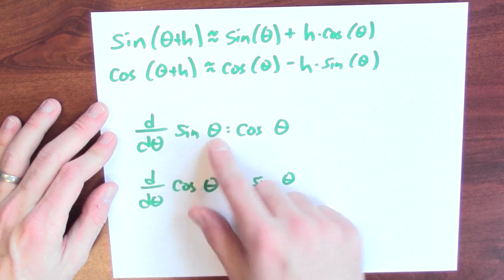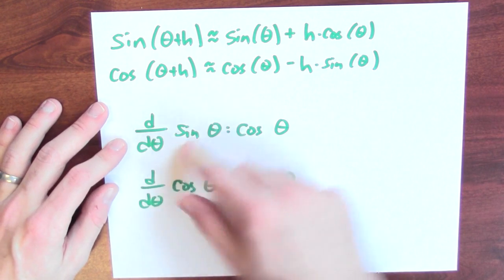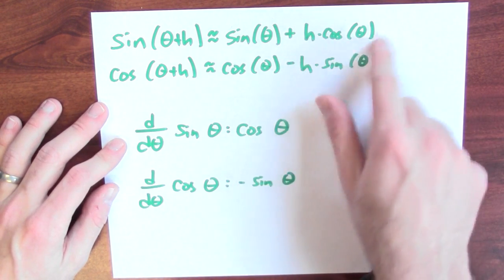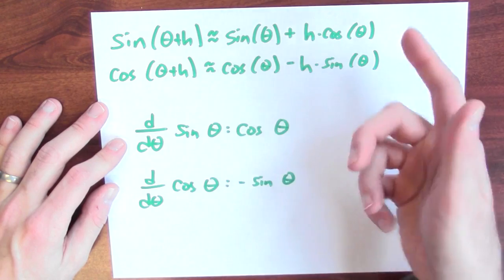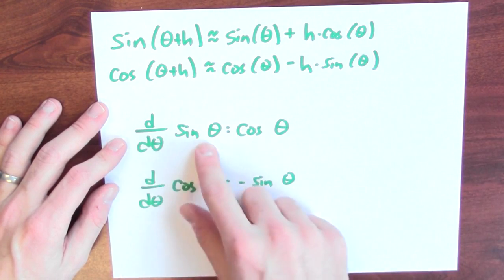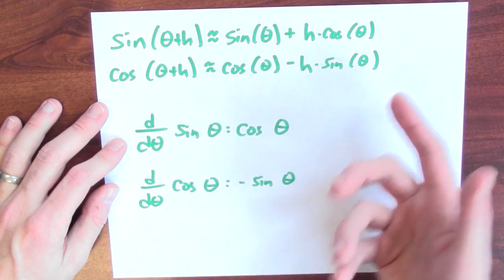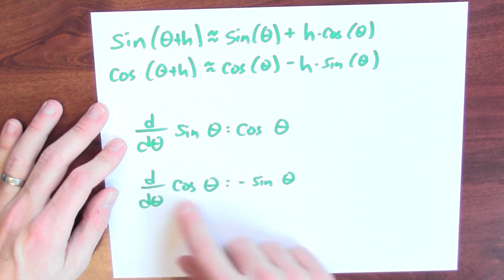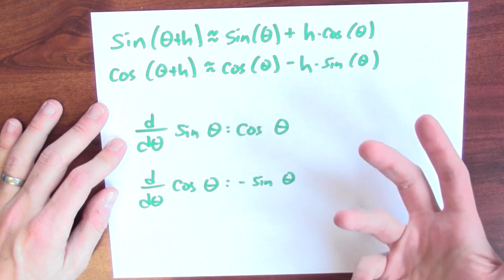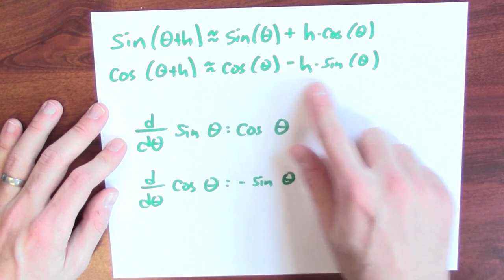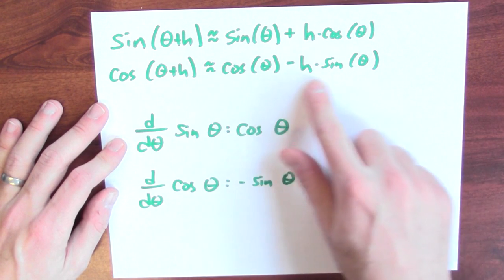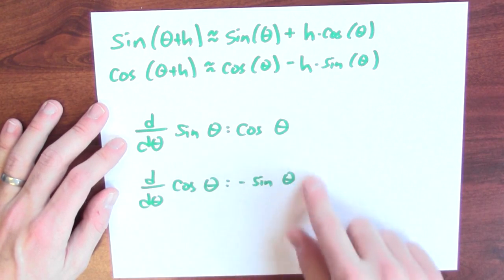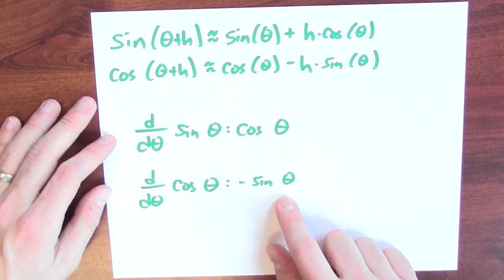From the picture, sine(theta+h) is about sine theta plus h cosine theta, and cosine(theta+h) is about cosine theta minus h sine theta. How does changing theta affect sine? About a factor of cosine theta compared to the input — so the derivative of sine is cosine theta. And how does changing theta affect cosine? About a factor of negative sine — so the derivative of cosine is negative sine.